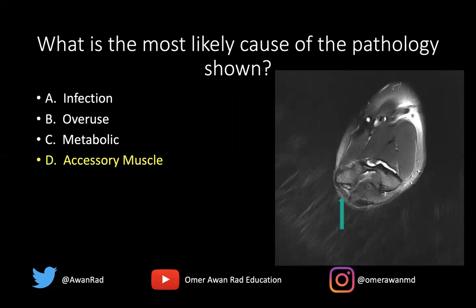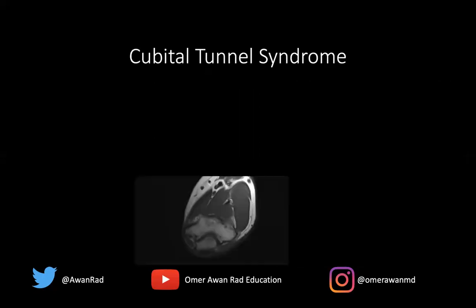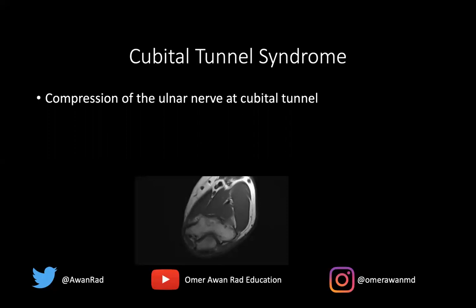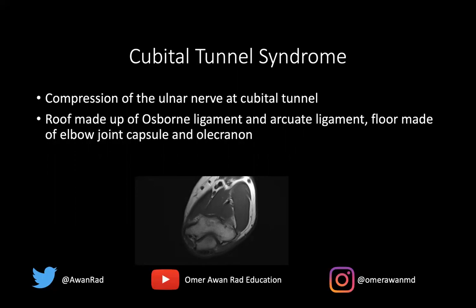The correct answer is an accessory muscle known as the anconeus epitrochlearis, resulting in ulnar nerve impingement and ulnar neuritis. Cubital tunnel syndrome is compression of the ulnar nerve at the cubital tunnel. The roof is made up of the Osborne ligament, which is a fascial thickening between the medial epicondyle and the olecranon.